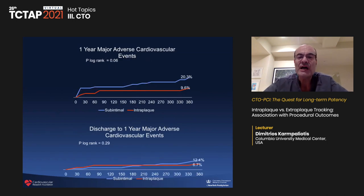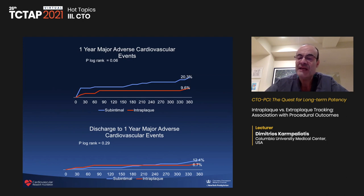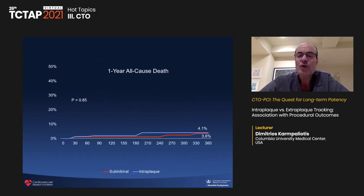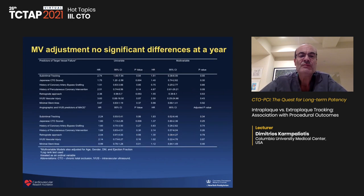The same pattern was seen for one-year major MACE — intraplaque was associated with numerically higher MACE in the subintimal group, but in landmark analysis it was not statistically significant. One-year all-cause death was basically identical whether subintimal or intraplaque. After multivariate adjustment, there was no significant difference at one year between intraplaque or extraplaque. The vast majority of patients, whether intraplaque or extraplaque, had significant or at least moderate improvement in symptoms, and exercise tolerance improved significantly and nearly identically in both arms.